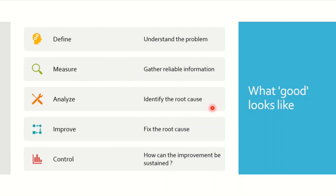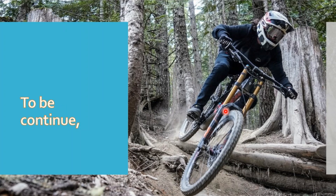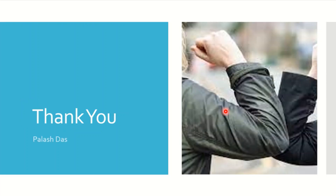Many tools are available to analyze root causes — you can use 5 Why, Fishbone, and other tools identified in ICH Q9. Sometimes you may not be able to establish a specific root cause, so there can be a most probable root cause. Then you need to fix it with a CAPA. In the Improve phase, you implement what you have observed is needed. In the Control phase, you establish new controls and verify how those controls are working and how improvement can be sustained. Please wait for my next video. Thank you very much, see you soon in my next series.